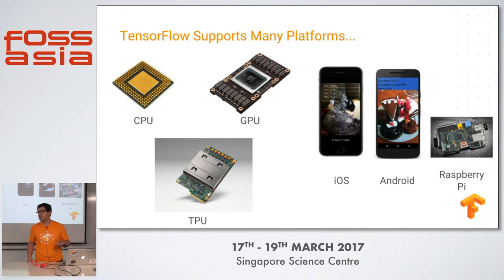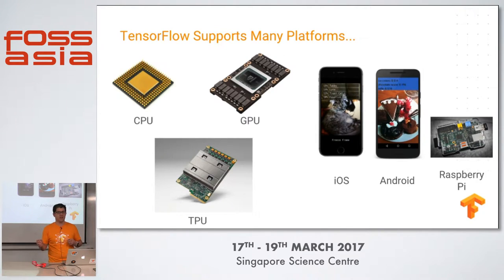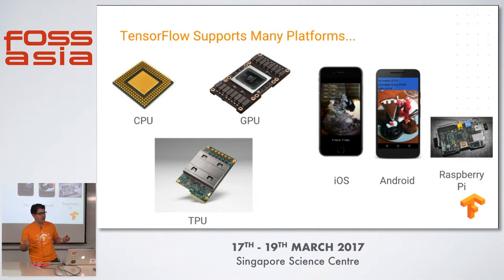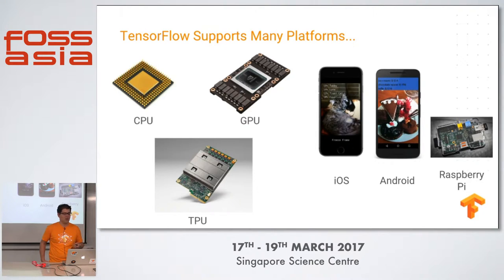TensorFlow supports many platforms. You can run it on different hardware architectures like CPUs and GPUs, which are really important because they're so fast that they enable a lot of deep learning applications to become tractable. Internally, we also have specialized tensor hardware called TPUs — Tensor Processing Units — and other companies are working on similar things. TensorFlow should be the place these companies target. You can run it on your Linux or Windows computer, on Android and iOS, or even on Raspberry Pi — cheap system-on-chip computers — which means you can deploy trained machine learning models anywhere.